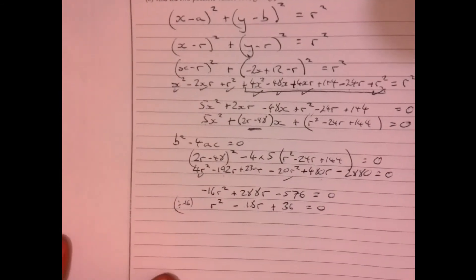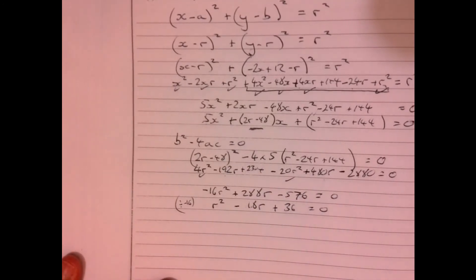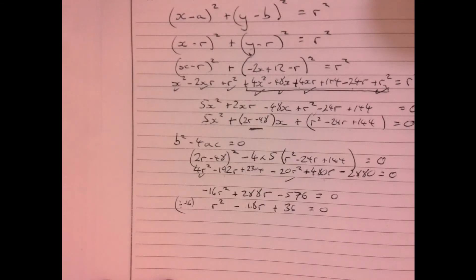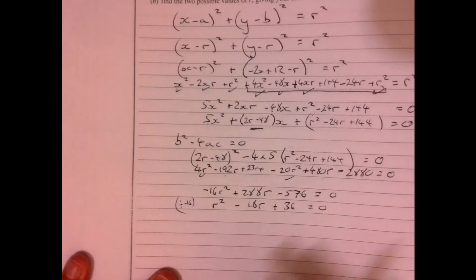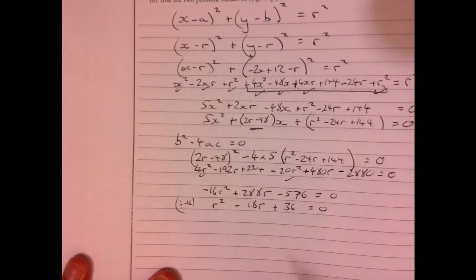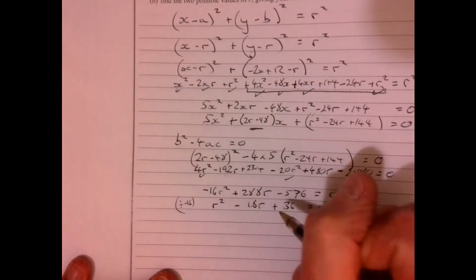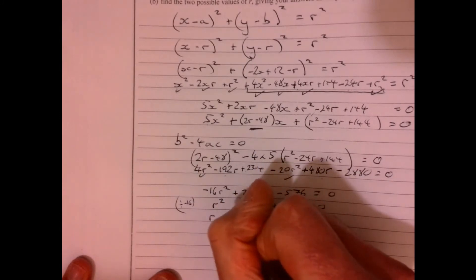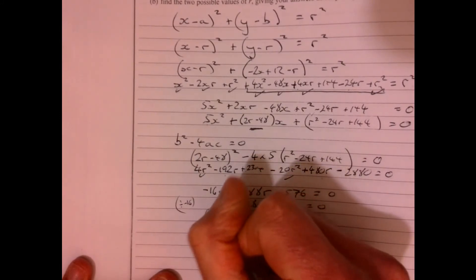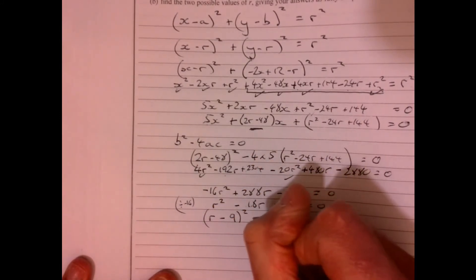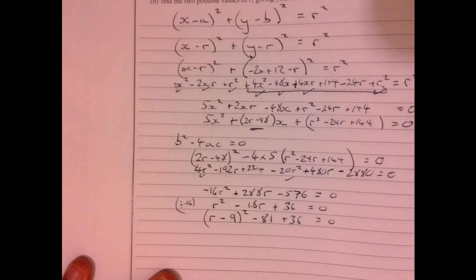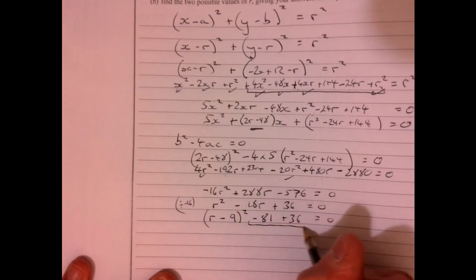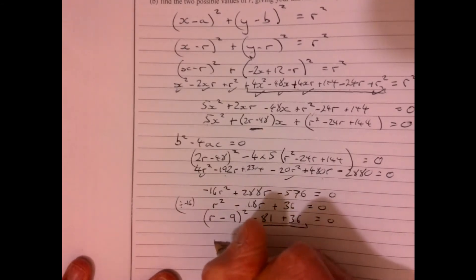So probably you could just shove it into the formula, couldn't you? Or what you could do maybe is let's complete the square. It's just like all nice bits of maths going on here. So let's think about how this is going to complete the square. We've got (r - 9)², now we've got to take away the 81 plus 36 equals zero.